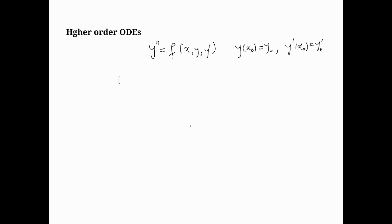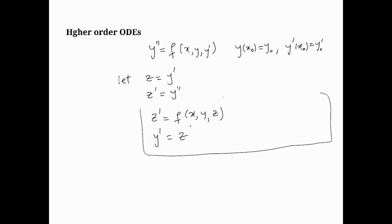The way to approach this is to let z equal y dash. This means that z prime is y double prime. The above equation now becomes z prime equals f(x, y, z), where y prime is replaced with z. We've got now two equations: y dash equals z and z prime equals f(x, y, z).